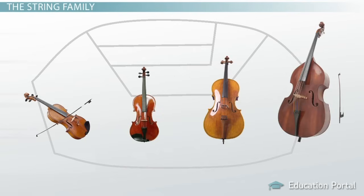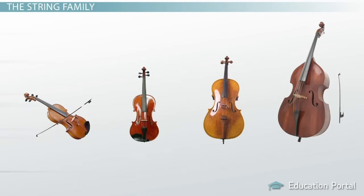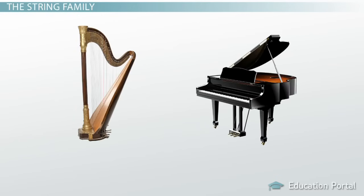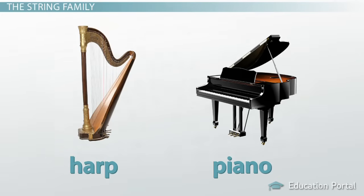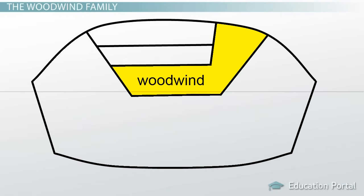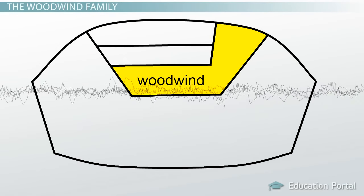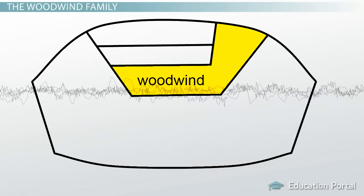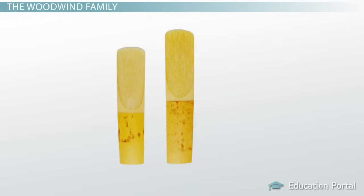These instruments are some of the oldest made for the modern orchestra, and some early orchestral music is even written solely for the string section. The harp and the piano are sometimes included in the string family, depending on the time period when the music was being played. The next largest section of the orchestra is usually the woodwind family.